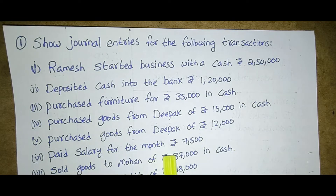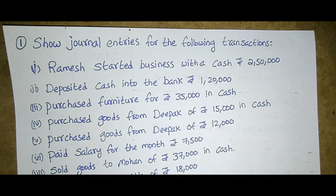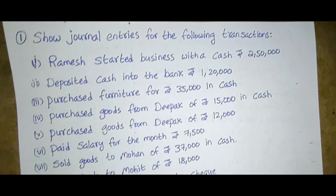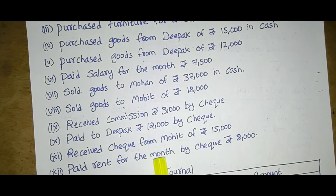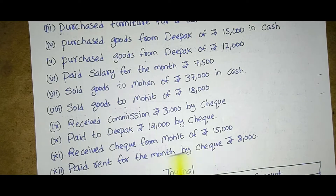Purchased goods from Deepak of twelve thousand on credit. Paid salary for the month seven thousand five hundred. Sold goods to Mohan of thirty-seven thousand in cash. Sold goods to Mohit of eighteen thousand cash. Received commission three thousand by cheque. Paid to Deepak twelve thousand by cheque. Received cheque from Mohit of fifteen thousand. Paid rent for the month by cheque eight thousand.